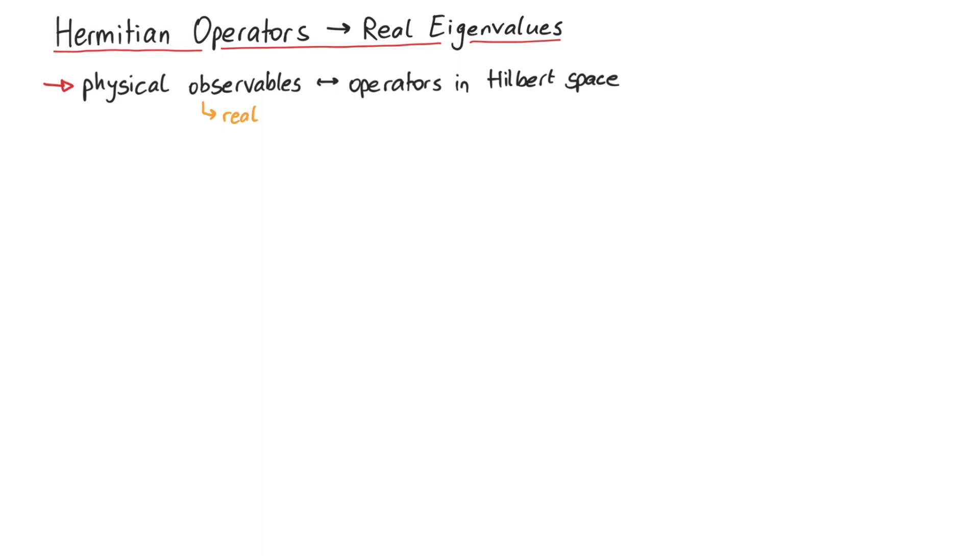But why do Hermitian operators imply real eigenvalues? To show this, let's consider the eigenvalue equation of an operator a.